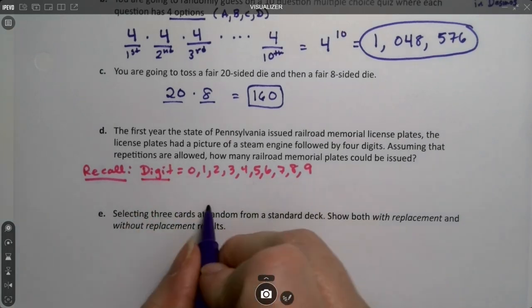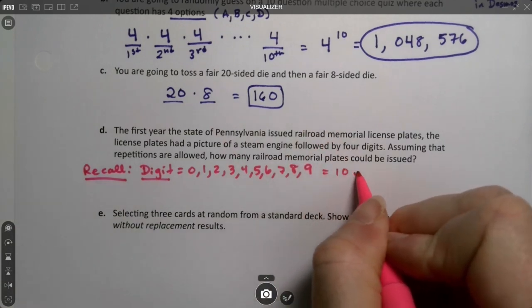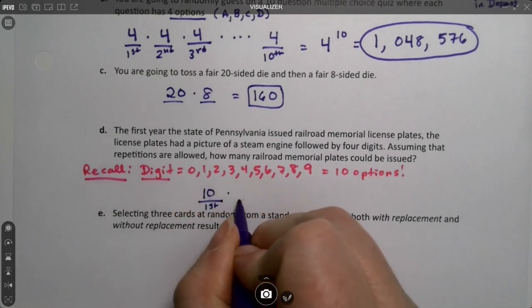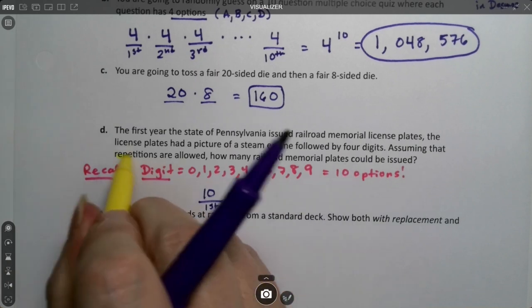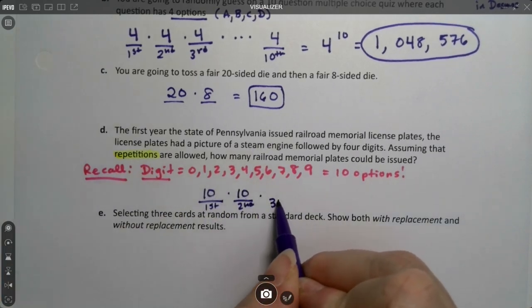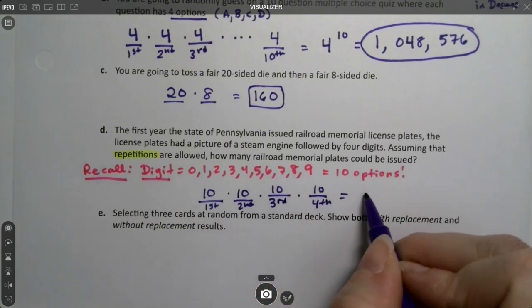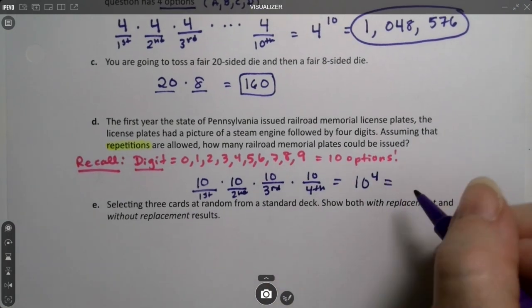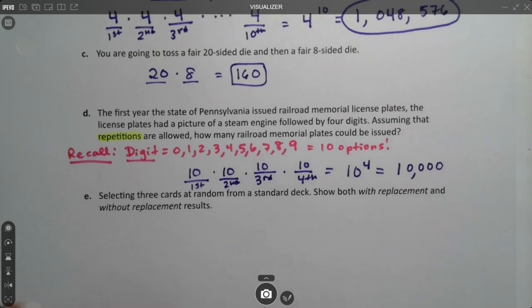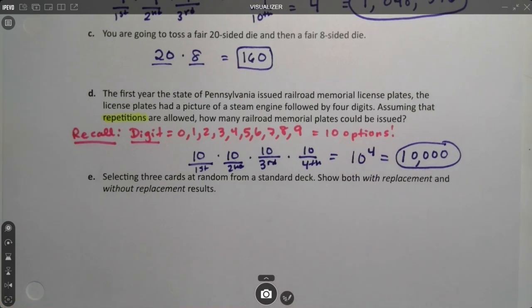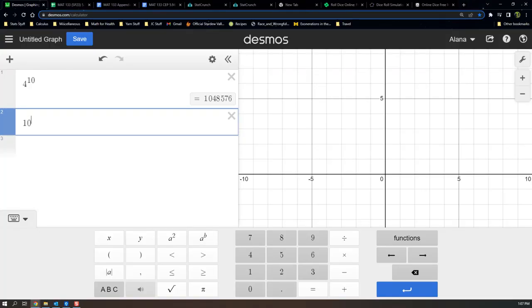When they did the license plate like this, the first spot is 10. But the second spot, because they're allowing repetitions, that's 10 times 10. The third one will have 10 and the fourth one will have 10, which is 10 to the fourth. And that would be 10,000. That's a little trick you can learn in school that when you take 10 to a power, it's always one followed by that many zeros. Here, I can show you in Desmos: 10, A to the B, four. See? One followed by four zeros. Simple as that.